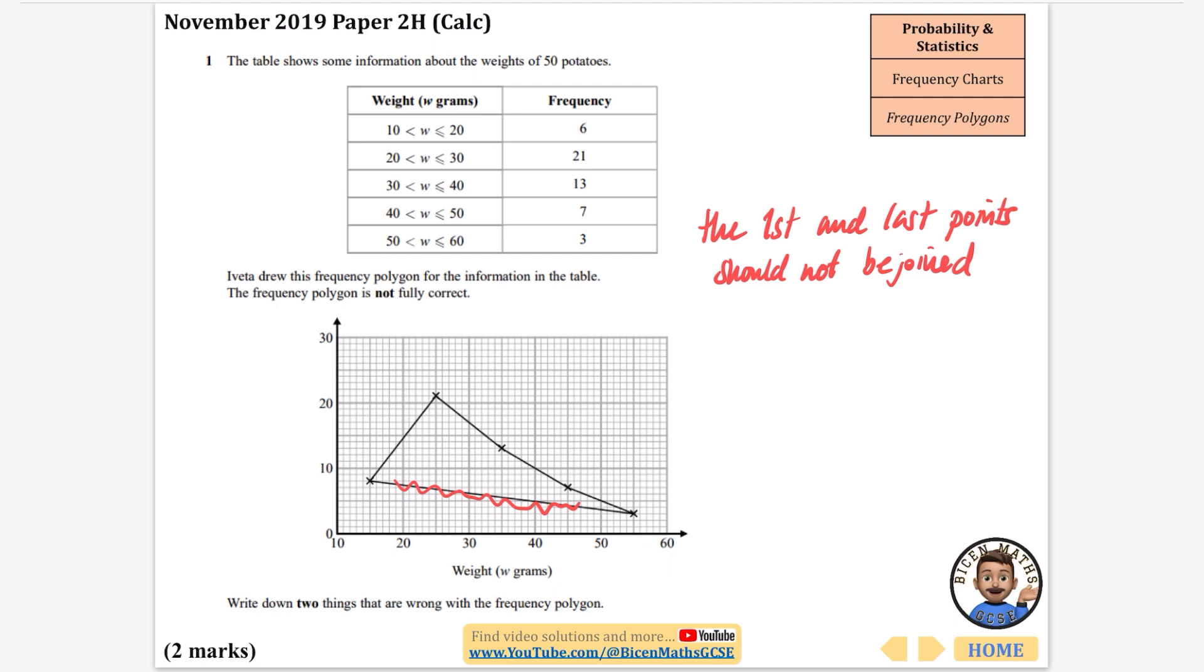I wonder if some of the values maybe haven't been plotted correctly. So we need this one is a 6, okay well it's not been plotted at 6, that's the mistake that we've got here, this one has been plotted at 8. So I'm going to say that the point for 10 to 20 has been plotted at 8 rather than 6.